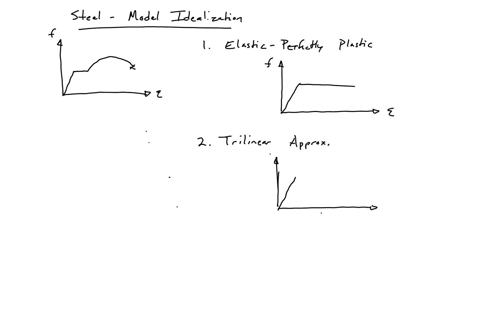We have our elastic region, we have our yield plateau, and then we have an initial strain-hardening region. So we essentially use one slope for our elastic region, and then another slope for our strain-hardening region. This is the trilinear approximation.